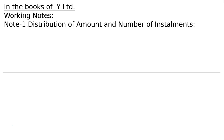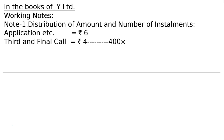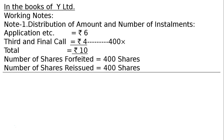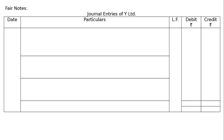In the books of Y Limited, working note 1 shows the distribution of amounts: application, third and final call of rupees 4, totaling rupees 10 for 400 shares. Y Limited forfeited 400 shares held by Mr. B, who failed to pay the third and final call. Number of shares forfeited: 400; number of shares reissued: 400 — this is a full reissue, not a partial reissue.